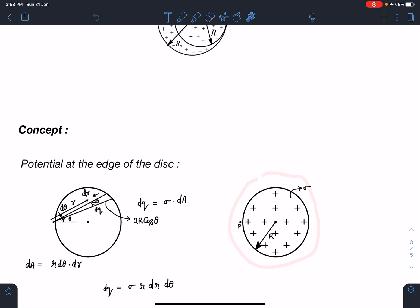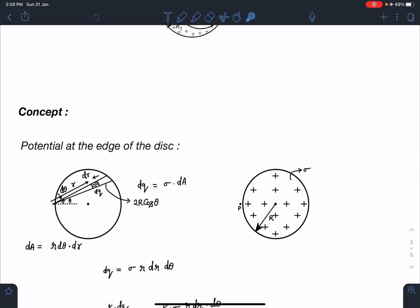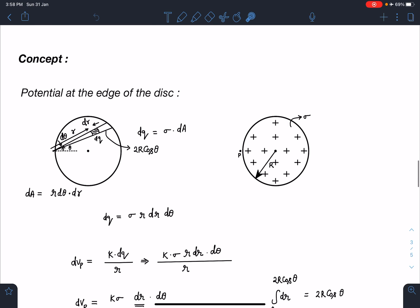Let's discuss the potential at the edge of the disk. As you can see here, this disk is uniformly charged with charge density sigma. I am going to take at a distance of r an element of thickness dr.